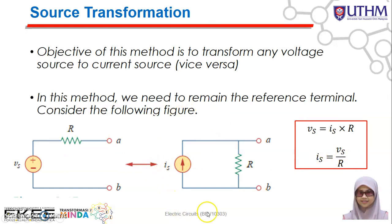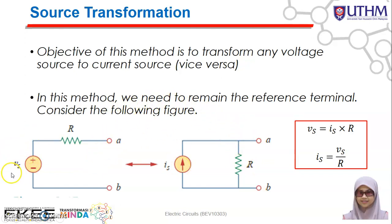Now if you have a current source connected to a parallel resistor and you need to transform it to a voltage supply, what you need to do is find the value of Vs. So Vs will be equal to Is multiplied with R. You multiply them together and you get the value of the voltage source. This is how you do the source transformation — very easy.